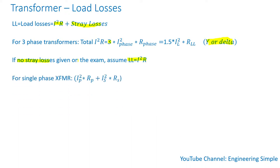For single-phase transformers, the total I squared R is just the primary current squared times the primary resistance, plus the secondary current squared times the secondary resistance.